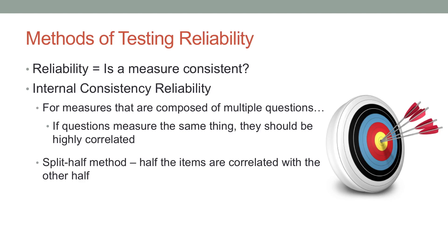One way to do this is to use what's called the split-half method. This is where you take half the items on a scale and correlate them with the other half. So if it's a 40-item scale, you take the first 20 items and correlate them with the second set of 20 items. You should expect, if all the items are measuring the same thing, that these two halves should be highly correlated with each other. A good indication is a correlation of about 0.7 or higher, which indicates a strong positive correlation.